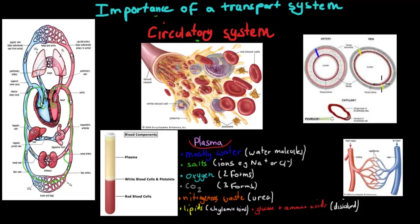Whereas the veins, again they're further away from the actual heart so they have less elastic layer because they just keep the same shape the whole time — they don't have to change shape.